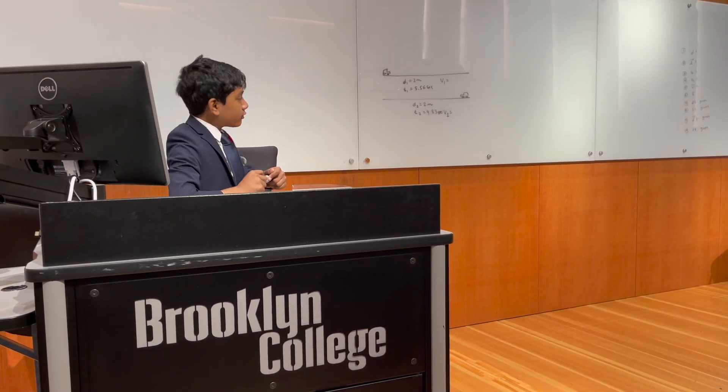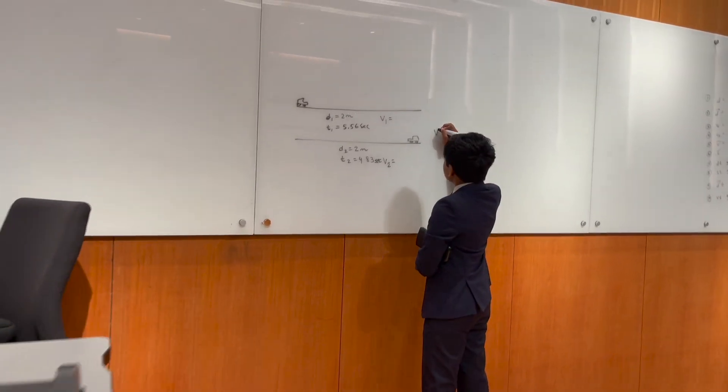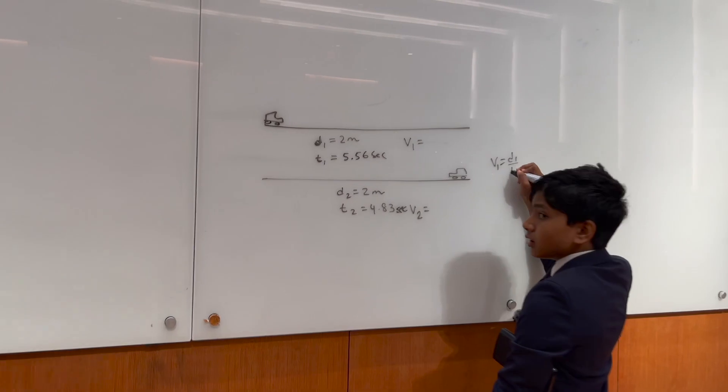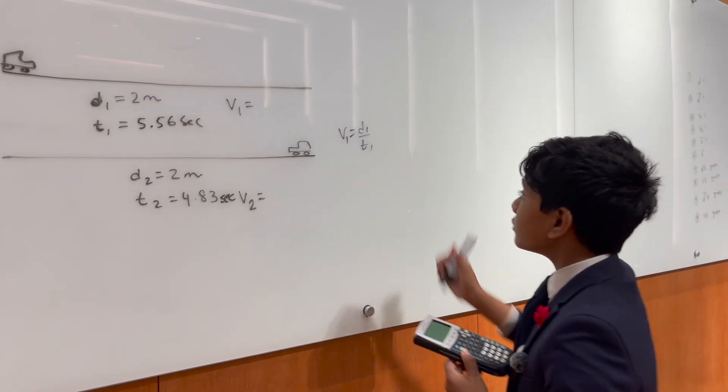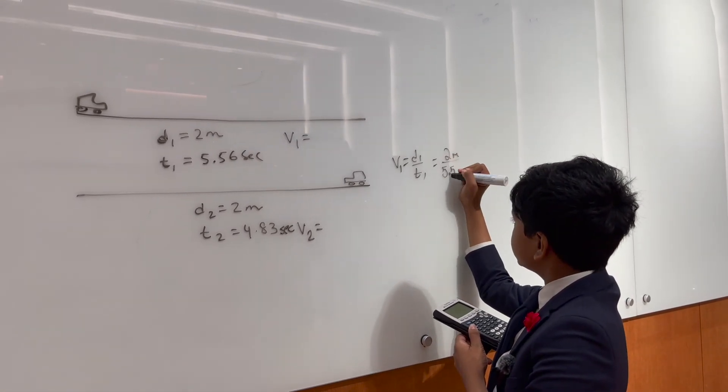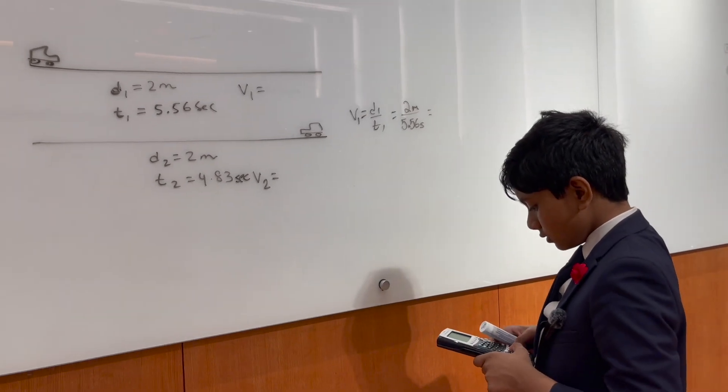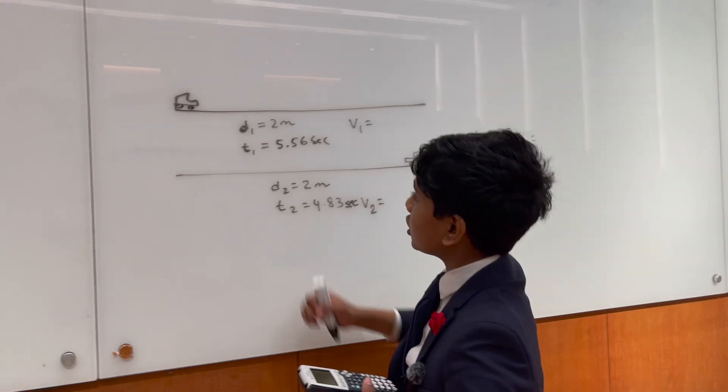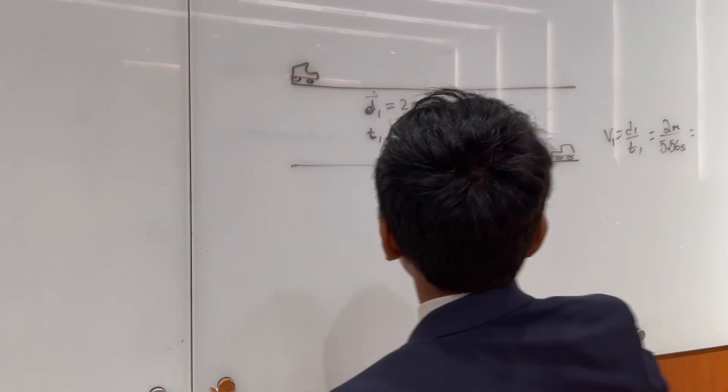Now for V1, all we have to do is take V1 over T1. So now let's take out our calculator and V1 over T1 is 2 meters over 5.56 seconds, which is equal to 2.5. I don't think you mean displacement once because velocity is displacement. Yes, I'm sorry, but that was not included in the symbol here. So let's do that.